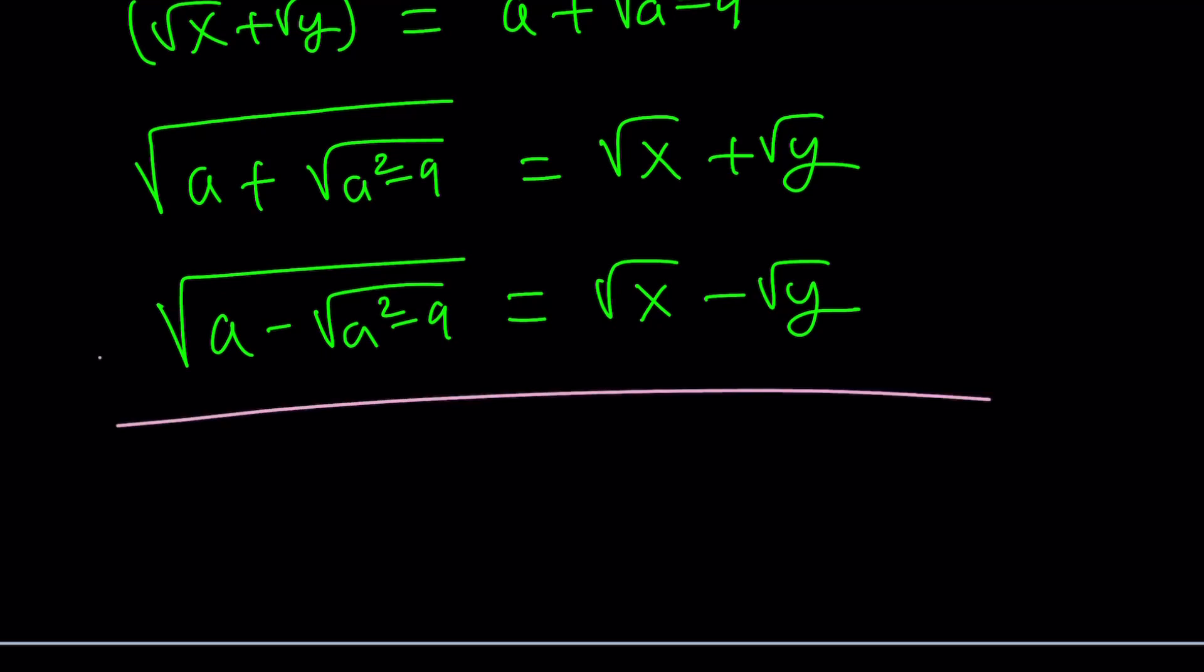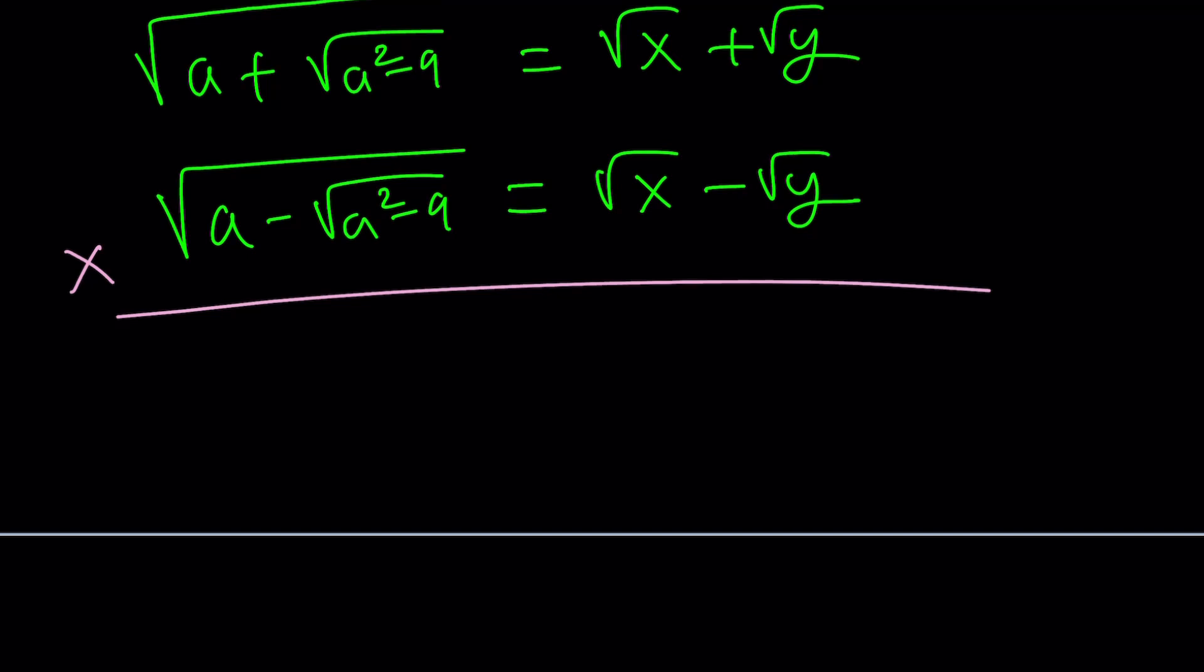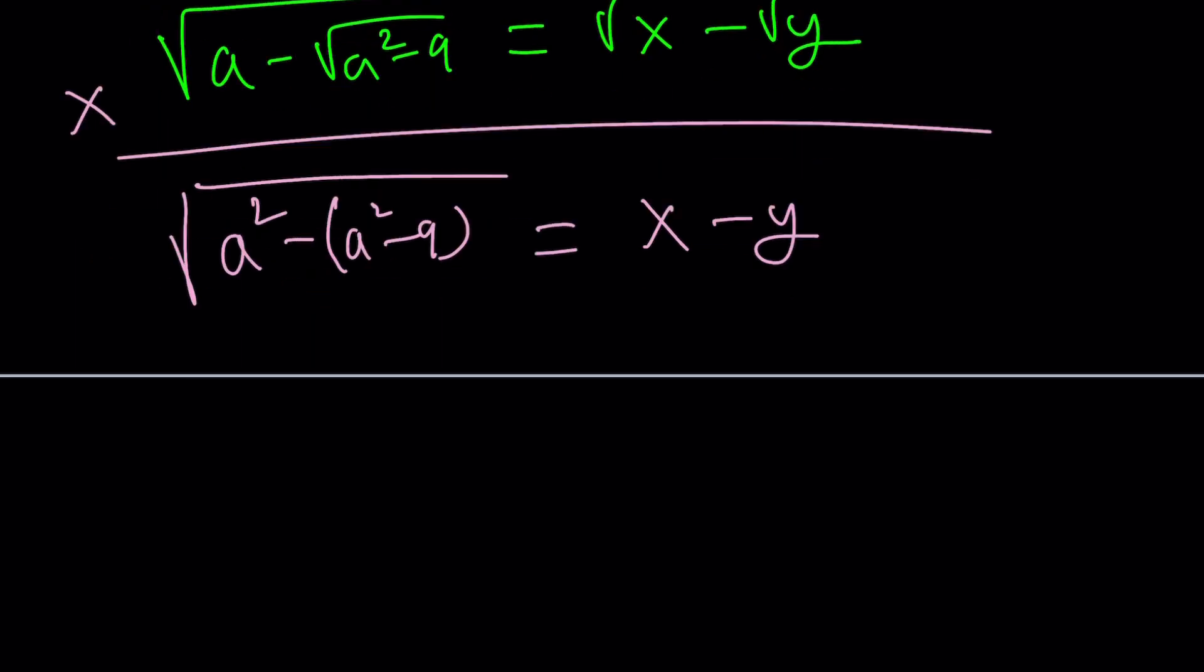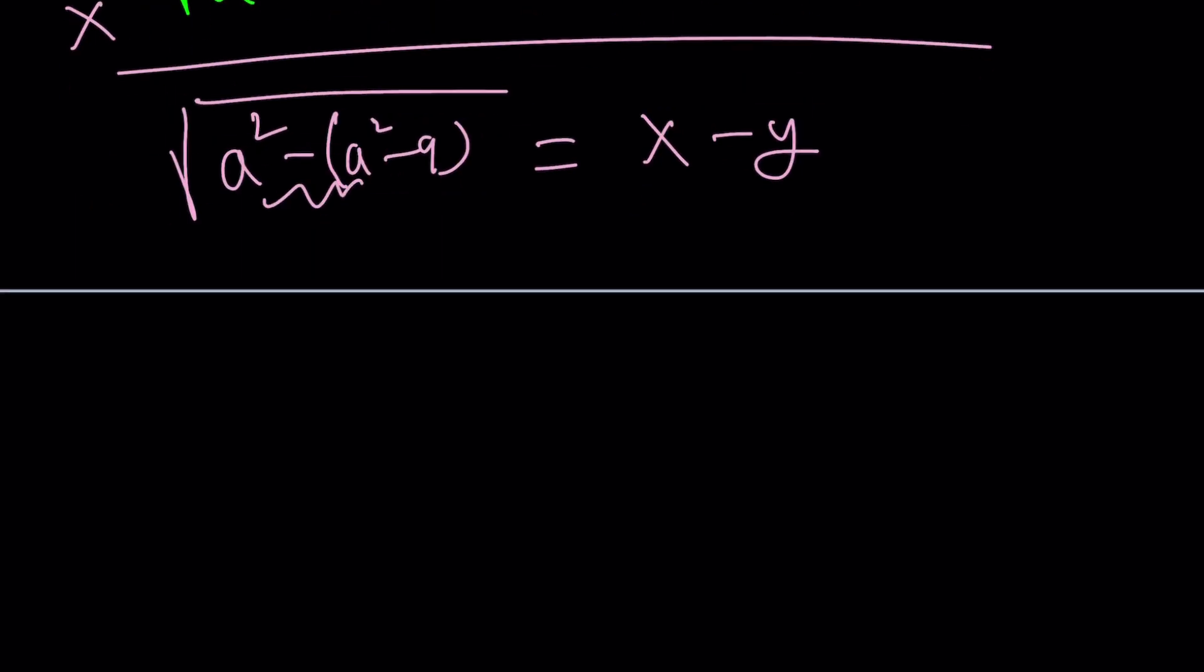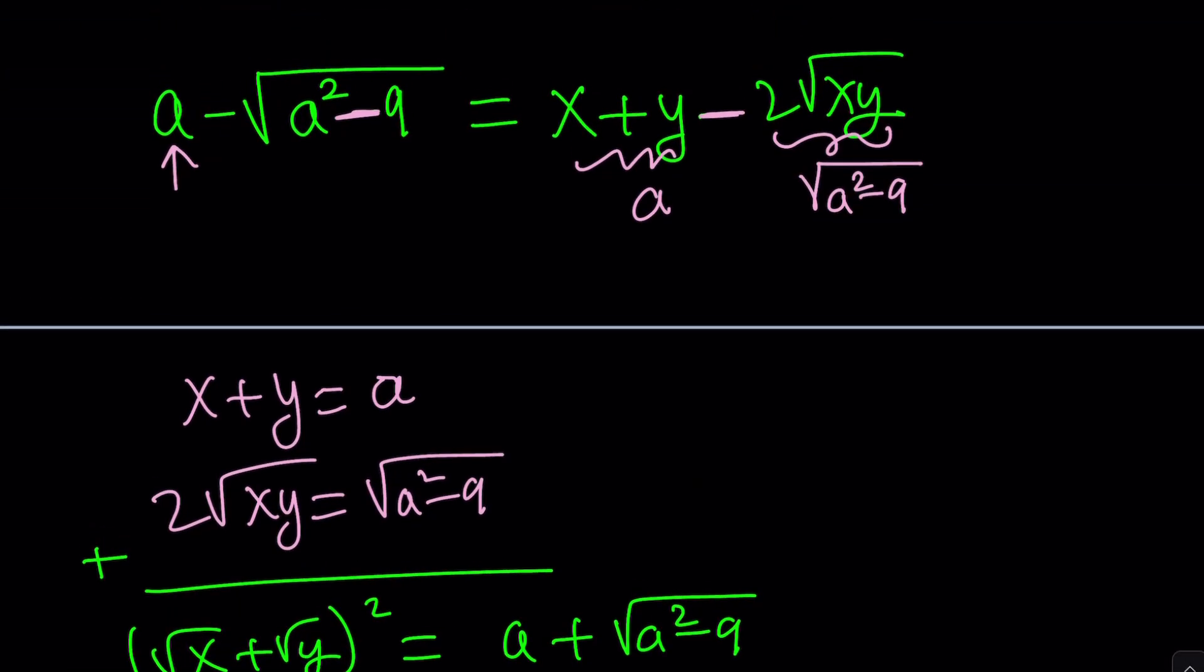In this case, I have two equations, so I could probably multiply these together. And when I multiply them together, I should be getting under the radical a squared minus the quantity a squared minus nine. That comes from difference of two squares. And on the right hand side from difference of two squares, I get x minus y. Notice that under the radical, we have a nine, which is three. So from here, we get x minus y is equal to three.